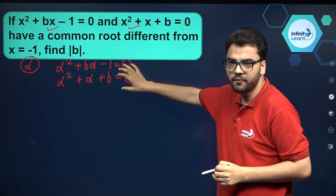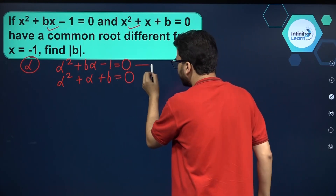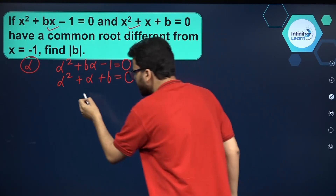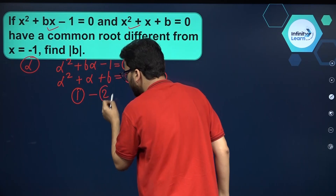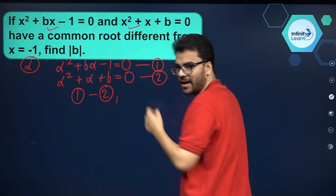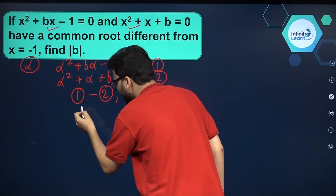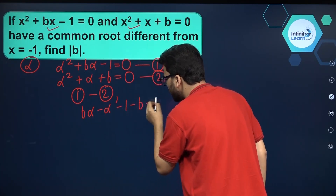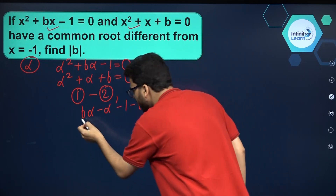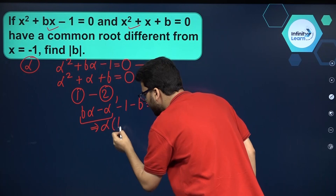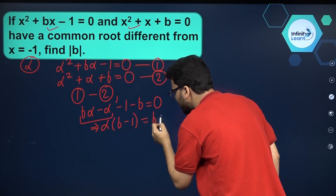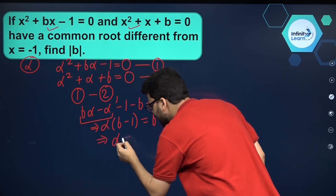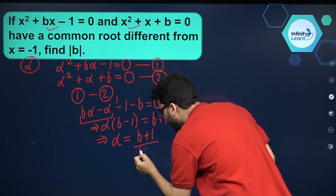Can I find the value of alpha from these two equations? Subtracting equation 2 from equation 1: alpha² and alpha² cancel, leaving b·alpha - alpha - 1 - b = 0. Taking alpha as common: alpha(b - 1) = b + 1. So alpha = (b + 1) / (b - 1). This is our common root.